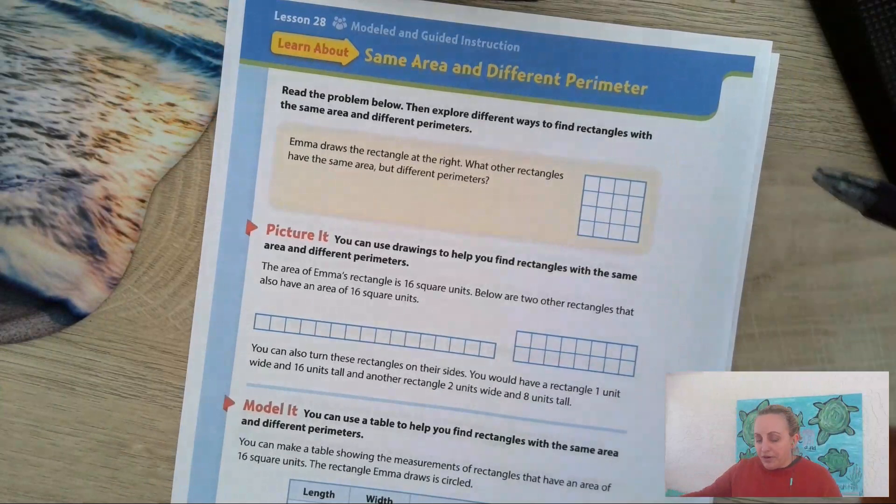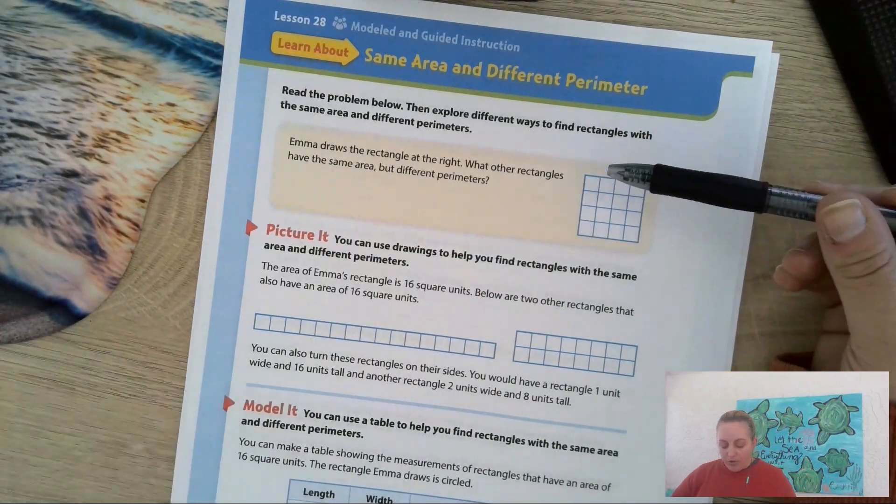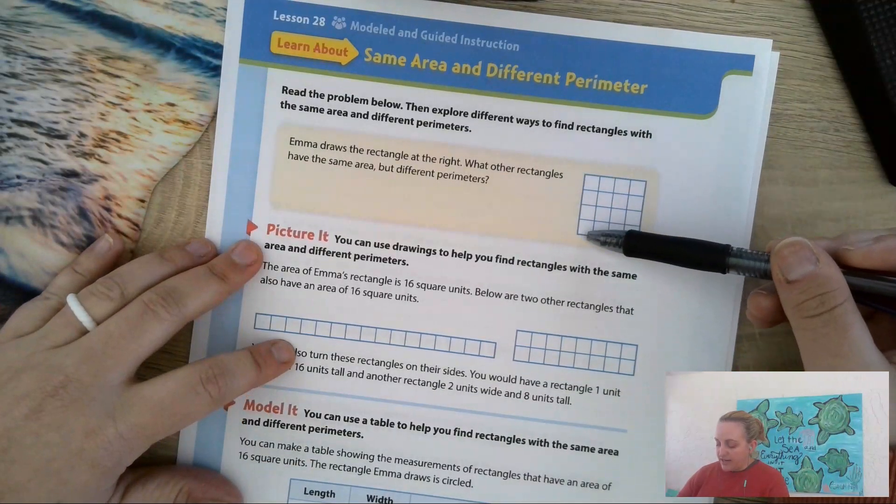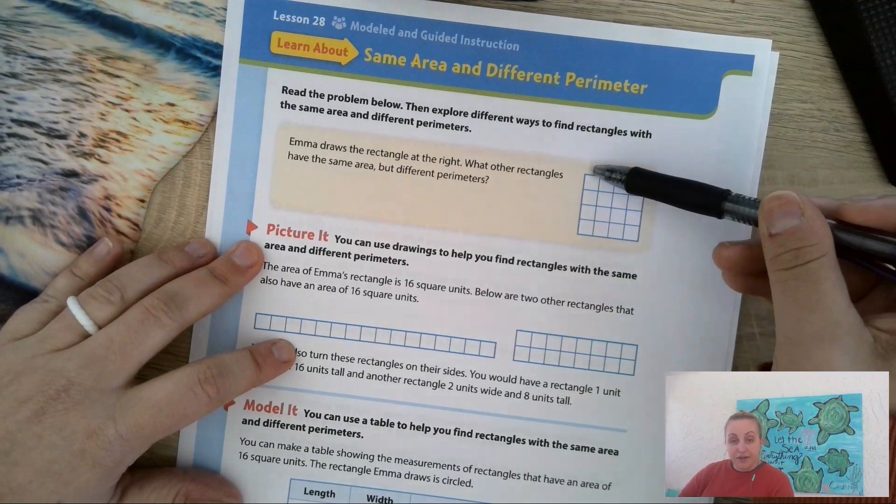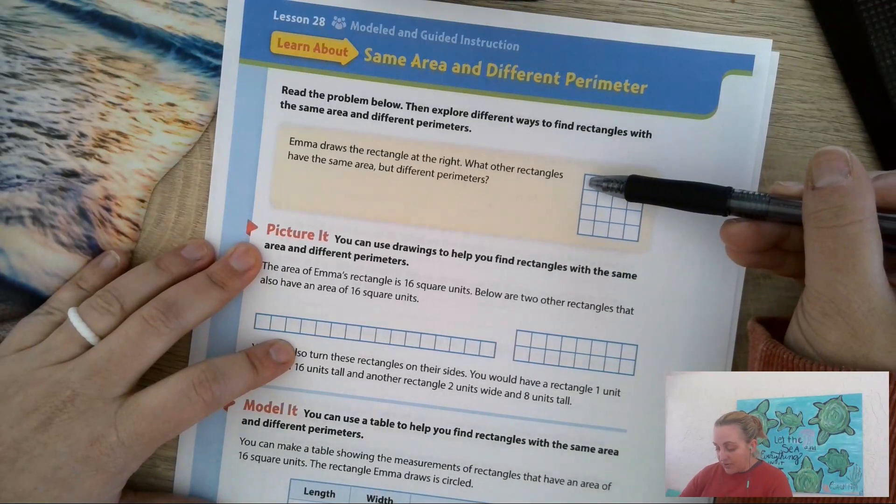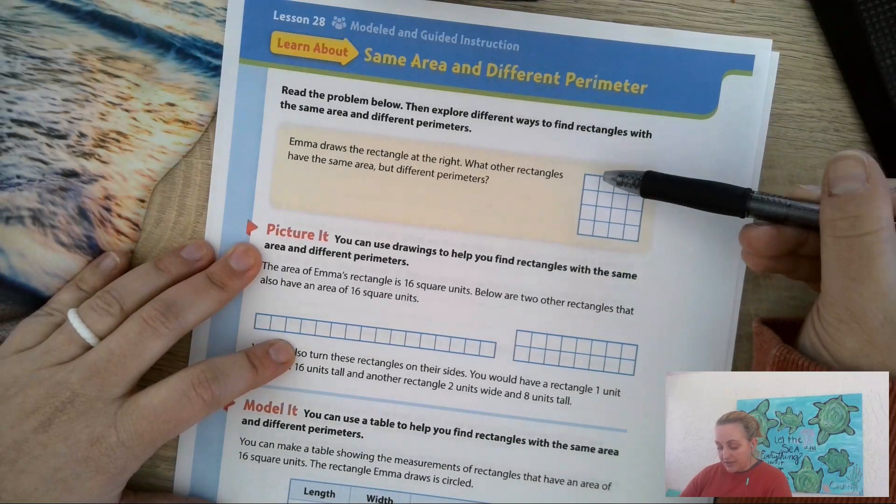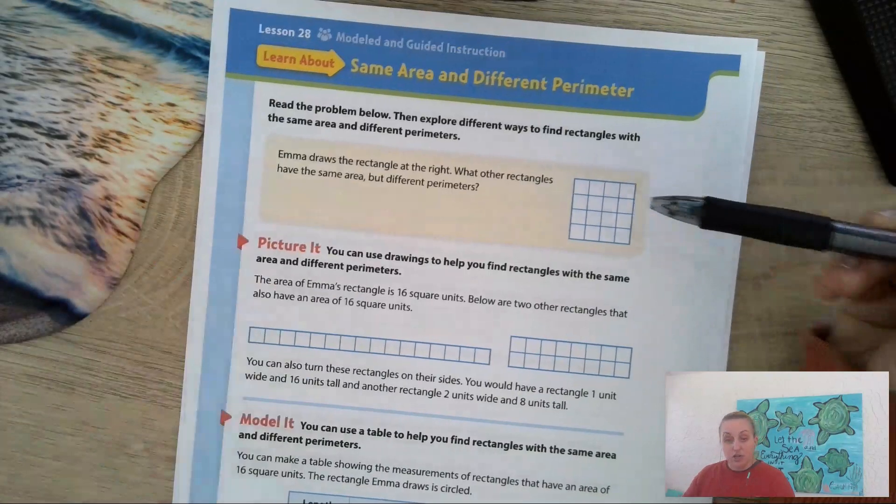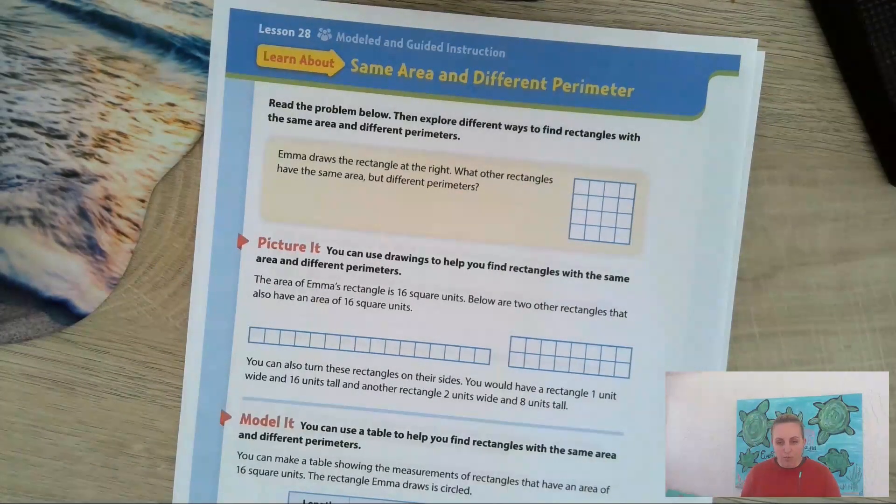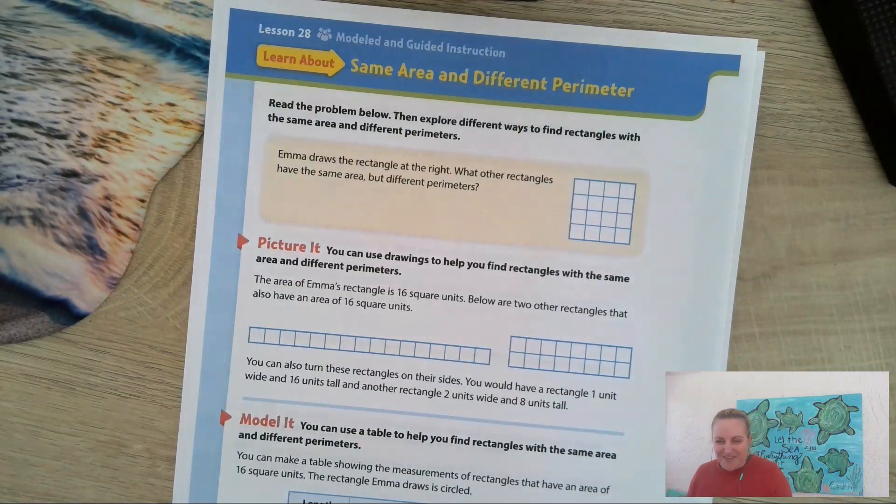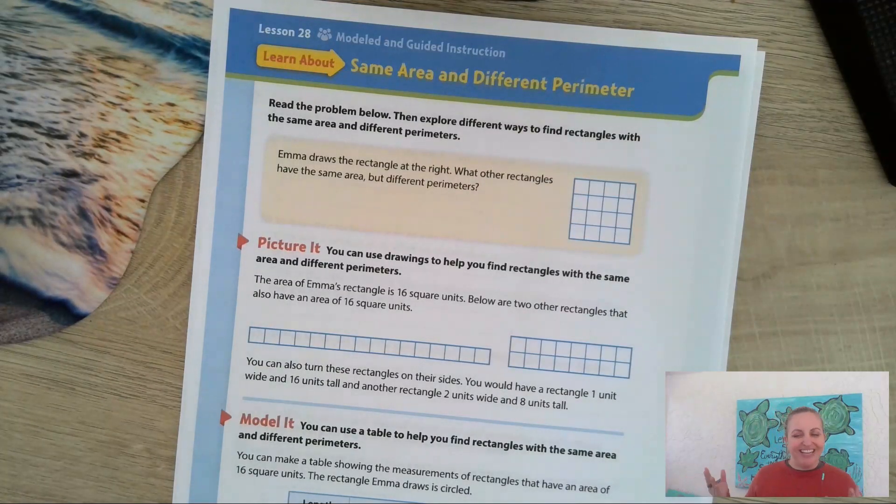The perimeter would be all the way around the outside of the shape. And to figure out the perimeter I count the squares around the outside of the shape, and that's going to give me the perimeter.